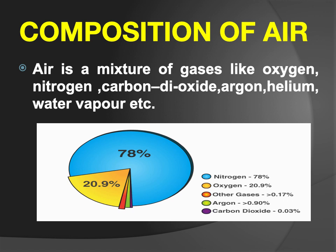Let's learn about the composition of AIR. AIR is a mixture of gases like oxygen, nitrogen, carbon dioxide, argon, helium, water vapour, etc. Nitrogen is 78%, oxygen is 20.9%, and other gases are less than 0.17%. Carbon dioxide is just 0.03% in the atmosphere. Argon is also less than 0.90% in the atmosphere.